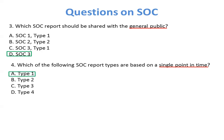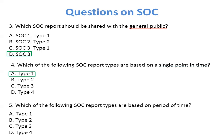Question 5: Which of the following SOC report types are based on a period of time? A period of time means we are talking about a minimum 6-month duration. So the correct answer is B, Type 2.